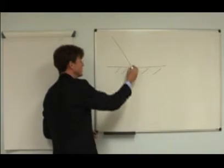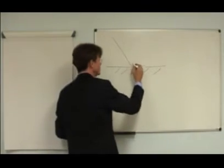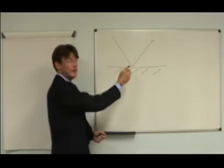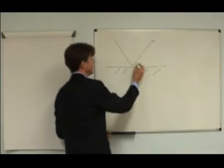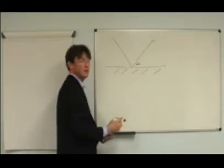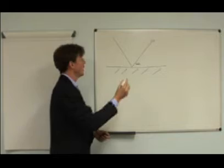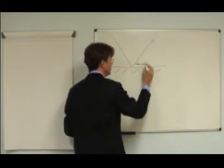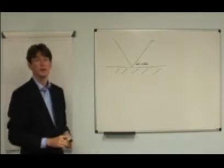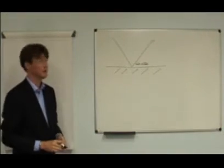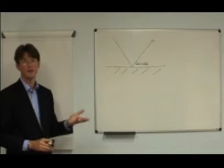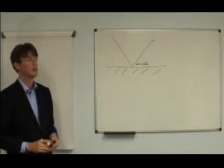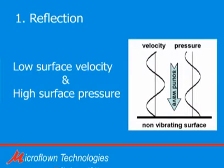When a sound wave hits a hard surface it will reflect, and at the point of reflection the sound pressure measured with a pressure microphone goes up, and the particle velocity measured with a microphone goes down. So due to the reflection, sound pressure is measured as a higher value and particle velocity is measured as a lower value. This is the first reason.